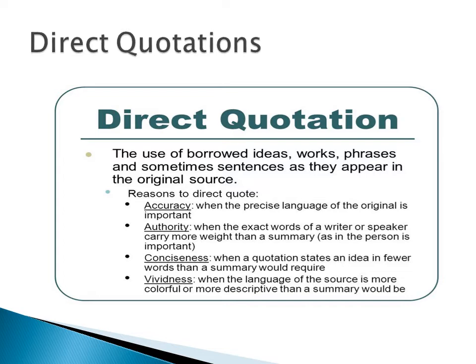Accuracy is when the precise language of the original is important. Authority is when the exact words of a writer or speaker carry more weight than a summary, as when the person is important. Conciseness is when a quotation states an idea in fewer words than a summary would require. Vividness is when the language of the source is more colorful or descriptive than a summary would be.